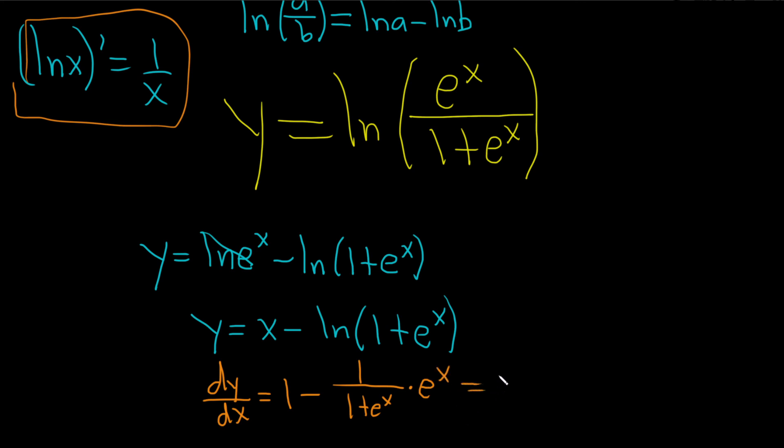So this is equal to 1 minus e to the x over 1 plus e to the x. And that would be the final answer. I hope this video has been helpful to someone out there in the world.